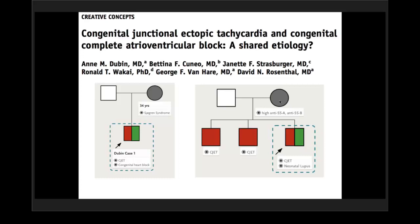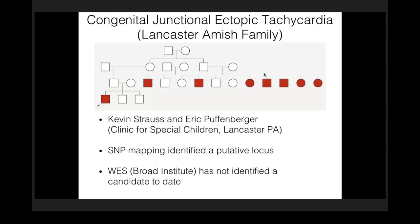On the other hand, we do see families that contributed to the 2009 article — a Lancaster Amish family from Kevin Strauss and Eric Puffenberger at the Clinic for Special Children in Lancaster, Pennsylvania, where multiple individuals have junctional tachycardia inherited through both the mother's and father's sides. It's very unlikely these individuals are exposed to maternal antibodies, and so this represents true hereditary junctional ectopic tachycardia.